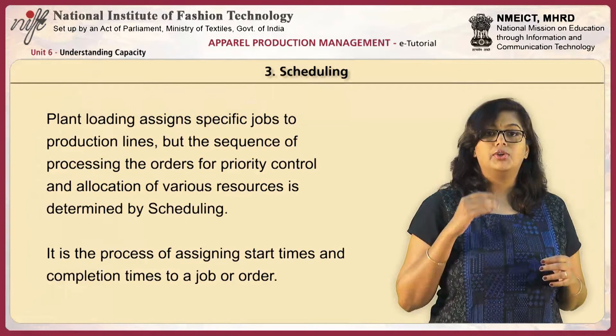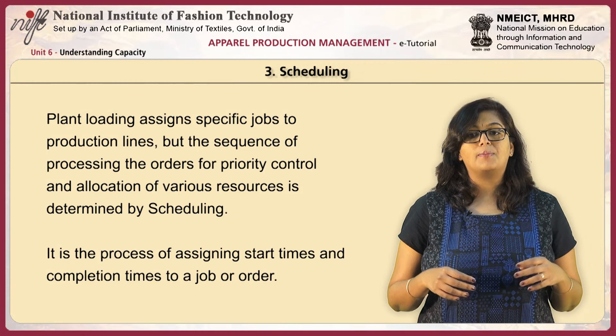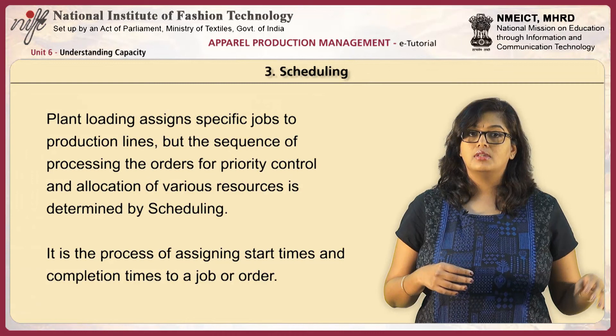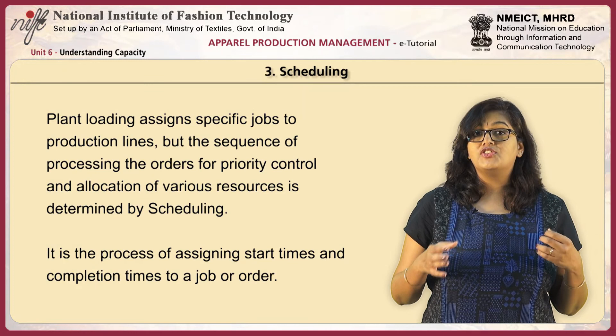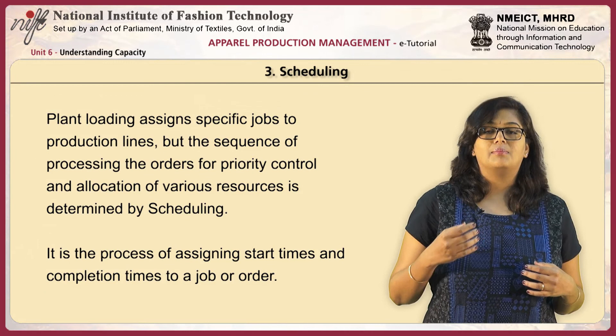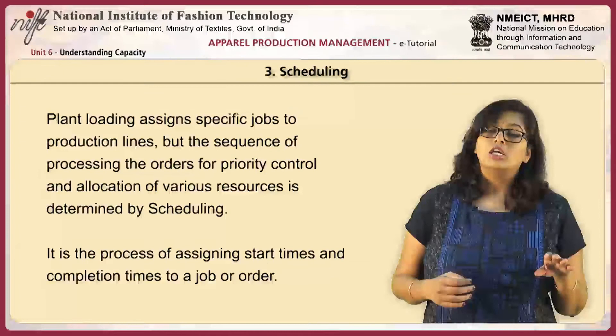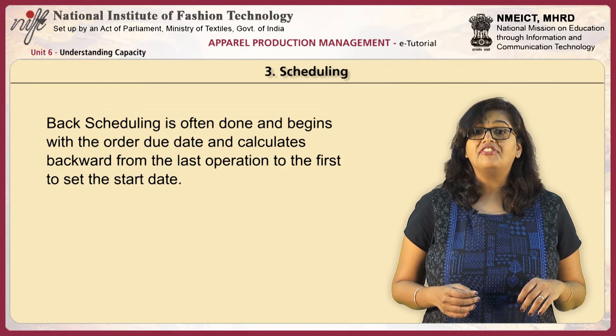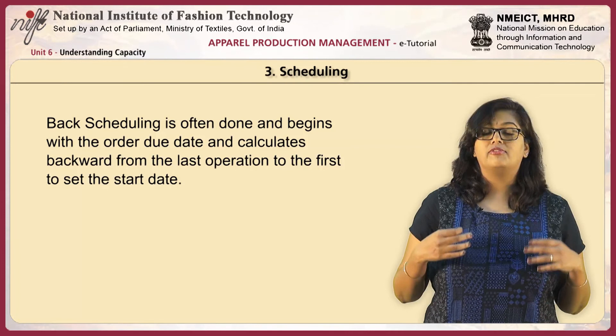The third part of plant capacity management is scheduling. Plant loading assigns specific jobs to production lines, but the sequence of processing orders for priority control and allocation of various resources is determined by scheduling. Routing gives a chain of events across departments; loading is for a particular department; and scheduling manages everything together. Scheduling is the process of assigning start times and completion times to a job or order. Back scheduling is often done — it begins with the order due date and calculates backward from the last operation to the first to set the start date of any style.